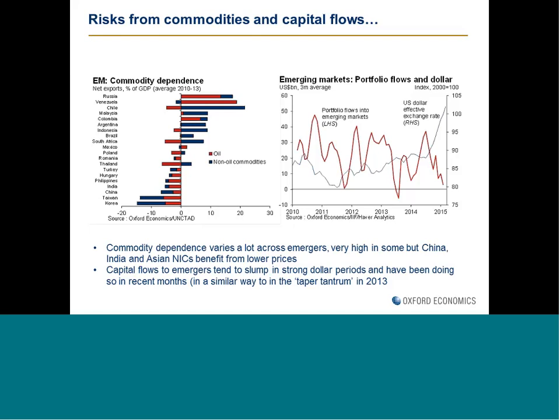Commodity dependence is a very key factor in vulnerability. A stronger dollar tends to push down global commodity prices. Whilst we have countries like Russia, other oil exporters, Malaysia, and Chile that are very geared to the commodity cycle, we also have countries like China and India which are net importers of commodities and will benefit from lower prices. That's also true of the Asian industrialized countries such as Korea and Taiwan.